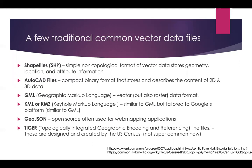GML, or Graphical Markup Language, is a vector and raster data format. KML is similar to GML but tailored to Google's platform. Why does it start with a K? Google Earth was originally owned by a company called Keyhole, who invented KML, and was then bought by Google.